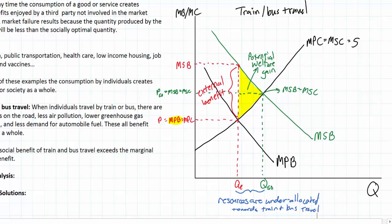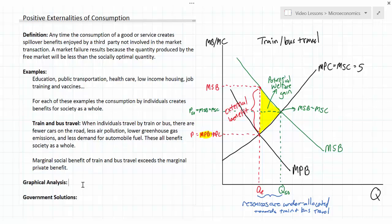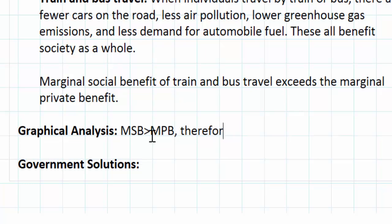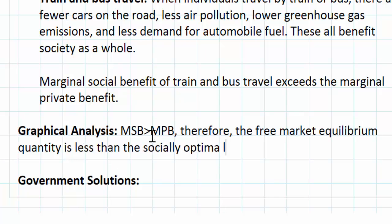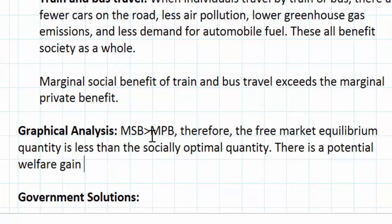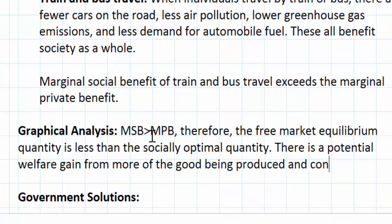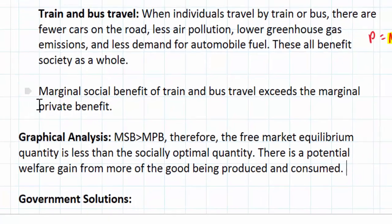Here we have the graph for a positive externality of consumption. The social benefits — which include less traffic, less pollution, less chance of accidents, and less CO2 emissions — include not only the private benefits but also the external benefits that society enjoys from people traveling by train or bus. The marginal social benefit exceeds the marginal private benefit, so the free market equilibrium quantity is less than the socially optimal quantity, and the market has failed to achieve a socially optimal outcome.